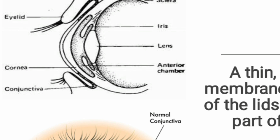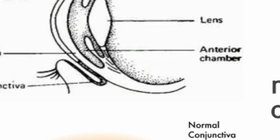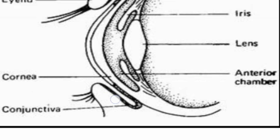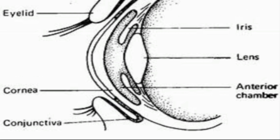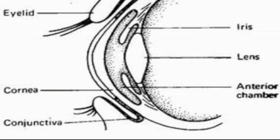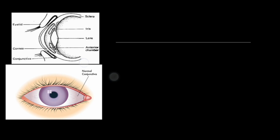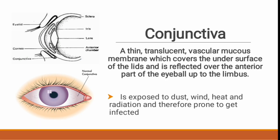Those blood vessels on the pinkish surface lie on the transparent conjunctival structure — that is why you observe the back surface, because the conjunctiva is transparent. The conjunctiva is absent on the cornea but is present at the scleral and corneoscleral junction and under the eyelids. It is exposed to dust, wind, heat, and radiation, so it is more prone to infection.